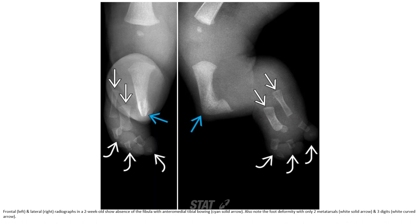This is a frontal and lateral radiograph in a two-week-old showing absence of the fibula with anterior-medial tibial bowing. Also note the foot deformity with only 2 metatarsals and 3 digits.